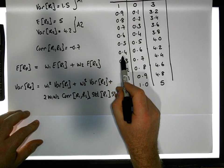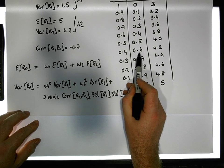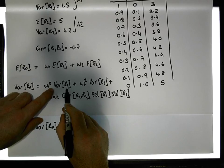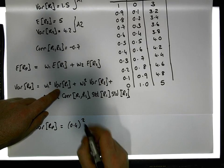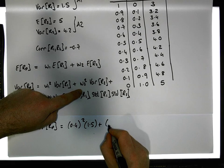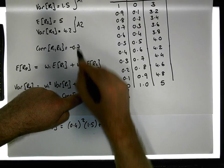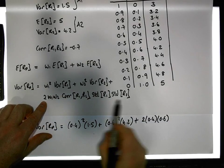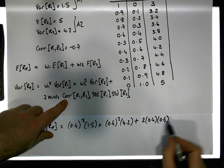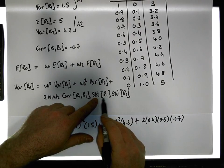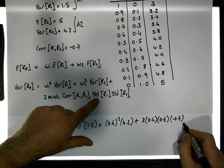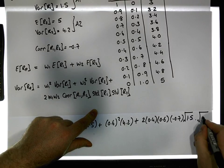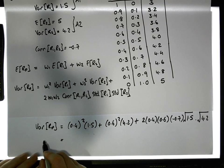Let's choose weights w1 = 0.4 and w2 = 0.6. Then the variance of the portfolio equals w1 squared (0.4²) times the variance of asset one, which is 1.5, plus w2 squared (0.6²) times the variance of asset two, which is 4.2, plus twice w1 times w2 — that's 2 × 0.4 × 0.6 — times the correlation between asset one and asset two, which is −0.7, times the standard deviation of asset one times the standard deviation of asset two — that is, the square root of 1.5 times the square root of 4.2.